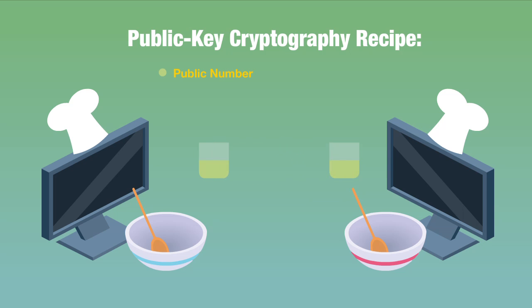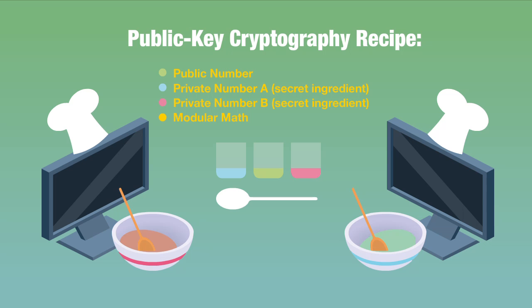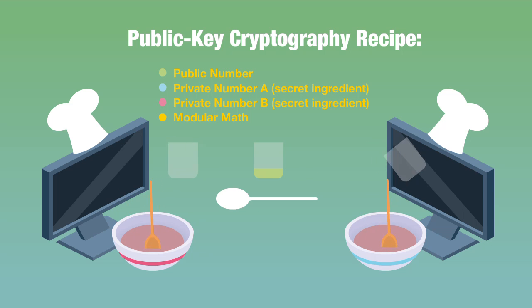Both sides start with a publicly available number, but then add a dash of their own secret numbers and mix them together using mathematical operations that are extremely difficult to reverse. They swap bowls and do it again. Dash of secret number, mix it up, and bam, secret key. They used the same recipe but never shared their individual secret ingredients. So the key is safe.